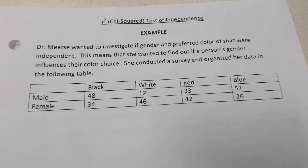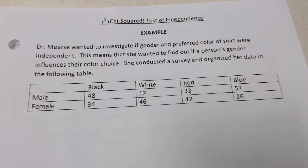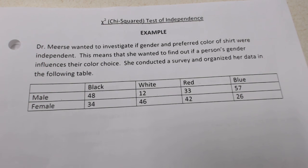This is Dr. Mears and today we're going to learn about the chi-squared test of independence. This is the example that we did in class together when I taught live. Dr. Mears wanted to investigate if gender and preferred color of shirt were independent — meaning she wanted to find out if a person's gender influences their color choice. She conducted a survey and organized her data in the following table.